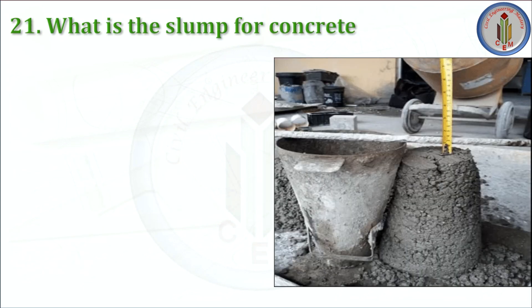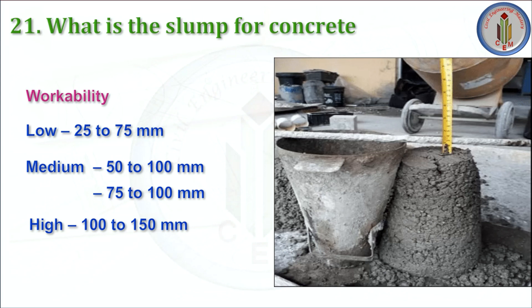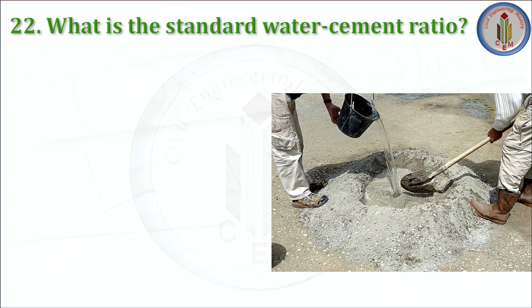What is the slump for concrete? As per Indian standard code, considering workability: if it is low, the slump is 25 to 75 mm; if it is medium, the slump is 50 to 100 mm or 75 to 100 mm; if the workability is high, the slump is 100 to 150 mm. Next: what is the standard water-cement ratio? As per IS 456-2000, the standard water-cement ratio lies between 0.4 to 0.55.